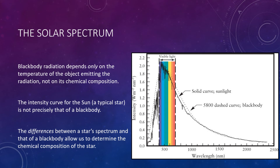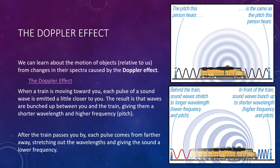Blackbody radiation depends only on the temperature of the emitting object, not on chemical composition — light from molten gold at 2,000 degrees Kelvin is nearly the same as from molten lead at 2,000 degrees. However, the intensity curve for the sun is not precisely that of a blackbody — the differences between a star's spectrum and that of a blackbody allow us to determine the chemical composition of the star. So the peak tells us temperature, and the dips or bumps — emission or absorption lines — tell us what the object is made of. We can also learn about the motion of objects from changes in their spectrum caused by the Doppler effect.